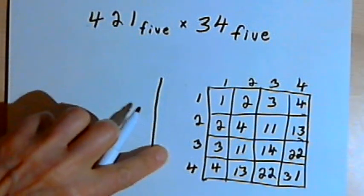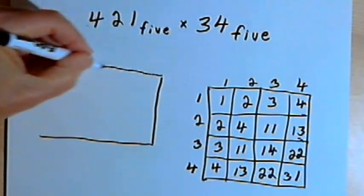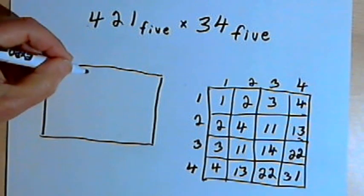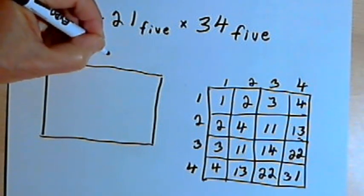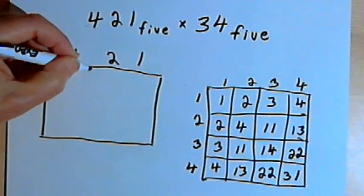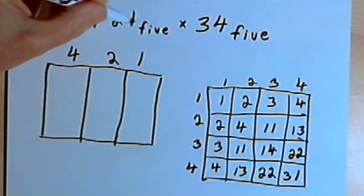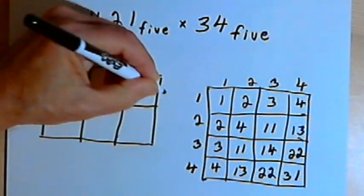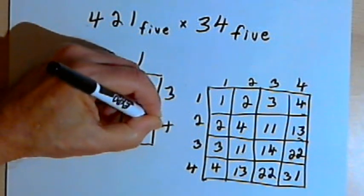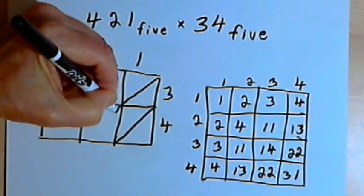So I'll make a box that I can put my numbers in. And since I'm doing 421, I'll make 3 columns, 1 for the 4, 1 for the 2, and 1 for the 1. And I'm multiplying that by 34, so I just need 2 rows, 1 for the 3, and 1 for the 4. And I'll put a diagonal into each box that I've made.